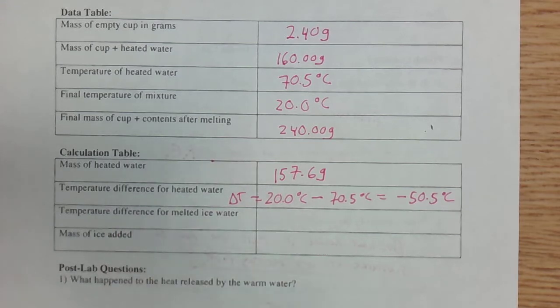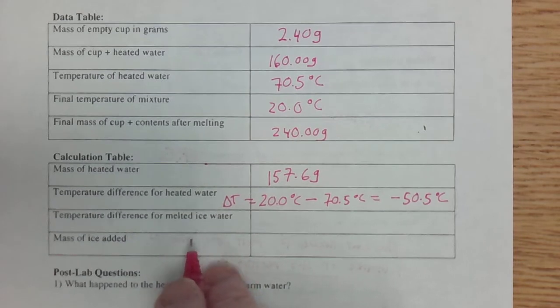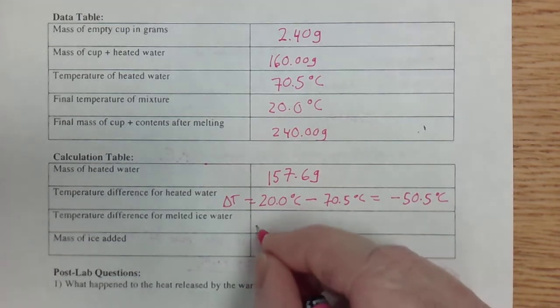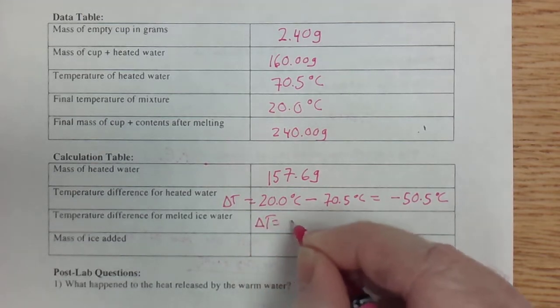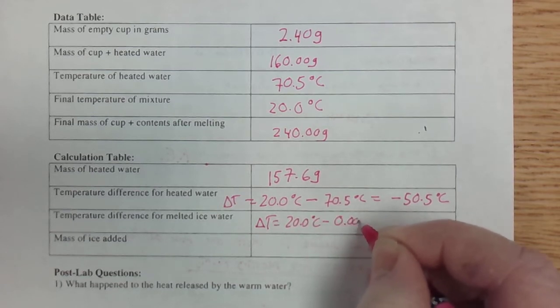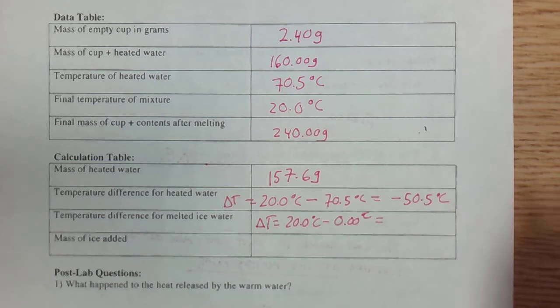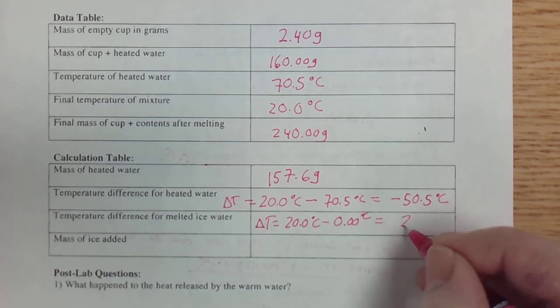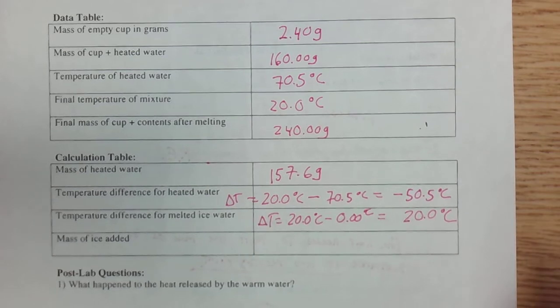Now the temperature difference for the melted ice water. When the ice melts, it forms liquid water. And that liquid water is at 0 degrees Celsius. So delta T this time equals the 20.0 degrees Celsius minus 0.00 degrees Celsius. Or what we're looking at is a change of a nice round 20 degrees Celsius.